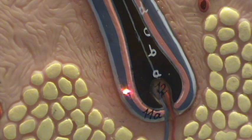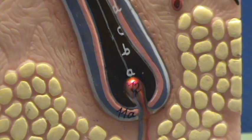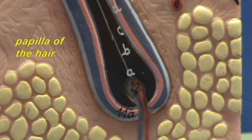This enlarged region is what is referred to as the hair bulb. This connective tissue that extends into the bulb is referred to as the papilla of the hair.